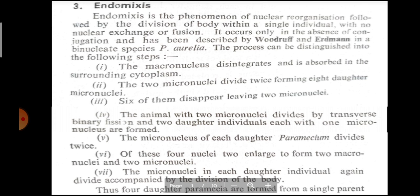ये प्रक्रिया जब Conjugation नहीं होता तभी होती है, और इसे Woodruff और Erdman ने Binucleate Species Paramecium Aurelia में पढ़ा था. इस Endomixis की Steps में, सबसे पहले Step में Macronucleus disintegrates and is absorbed in the surrounding Cytoplasm. यानि कि Macronucleus disintegrate होकर Cytoplasm में absorb हो जाता है. Next, 2 Micronuclei हैं, they divide twice by forming 8 daughter Micronuclei.